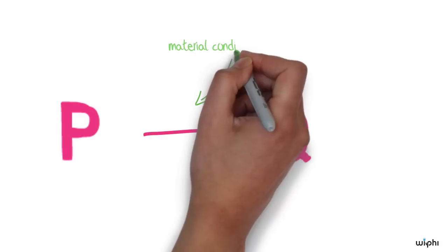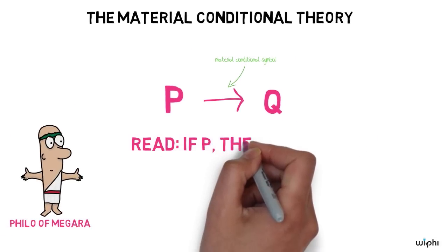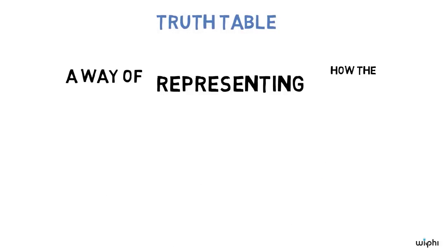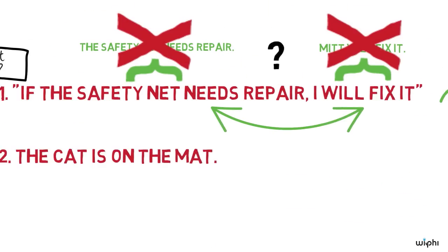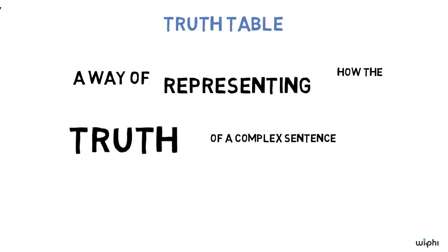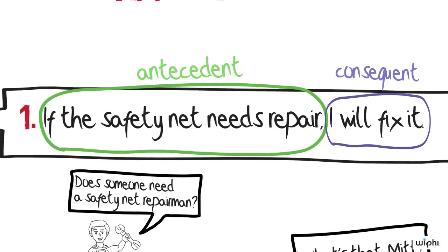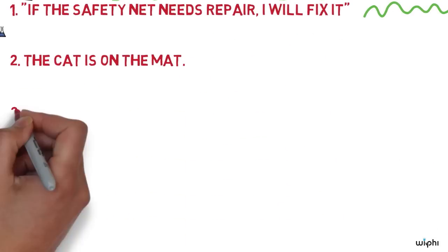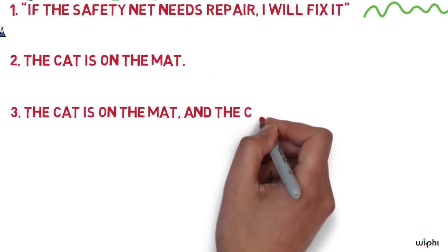In order to state the material conditional theory more precisely, we will make use of a device from logic called a truth table. A truth table is a way of representing how the truth of a complex sentence — in this case the conditional — depends on the truth values of its parts, in this case the antecedent and consequent. Let's start with a simple example of a conjunction. Take the sentence: 'The cat is on the mat and the cat is fat.'